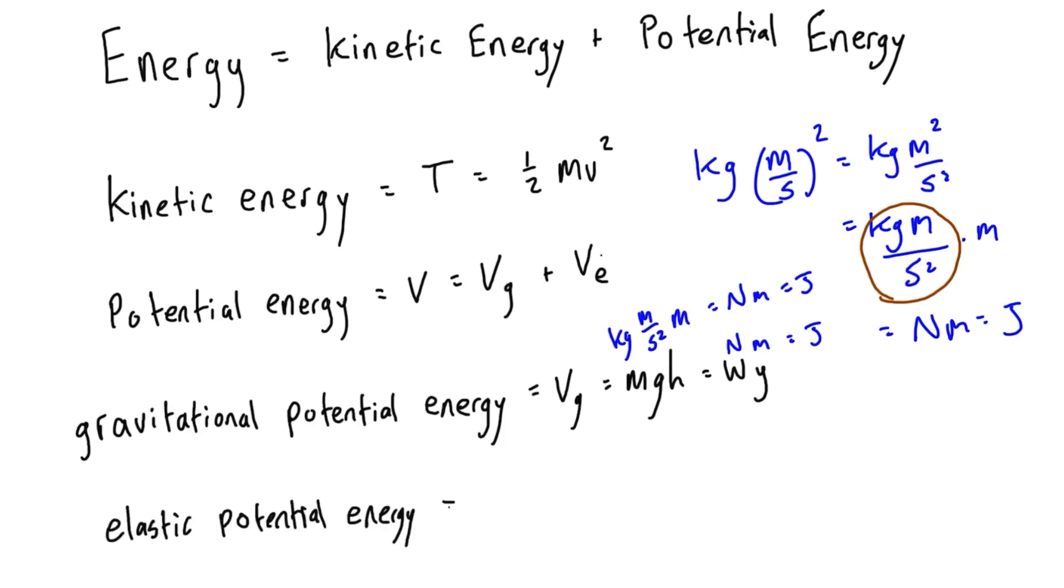And then the expression for elastic potential energy is Ve which is equal to positive one half k x squared. Now it's always positive because whether we're stretching or compressing a spring, the spring force will always be directed towards the unstretched position. It always wants to return to that position, so it's always going to give you a positive value.